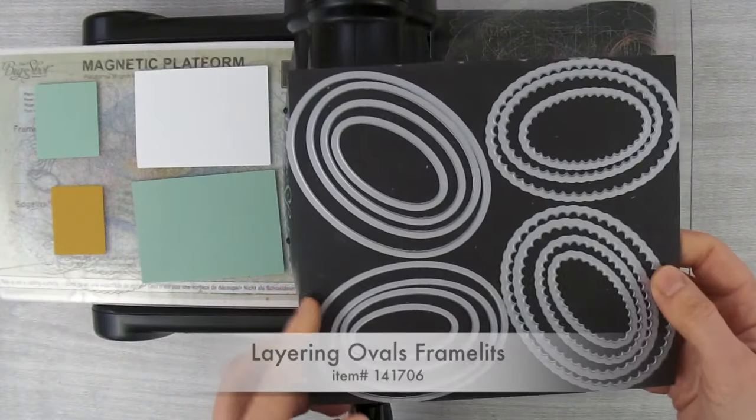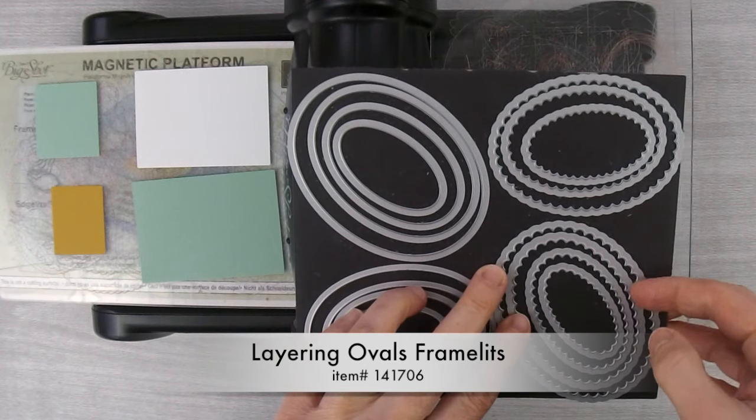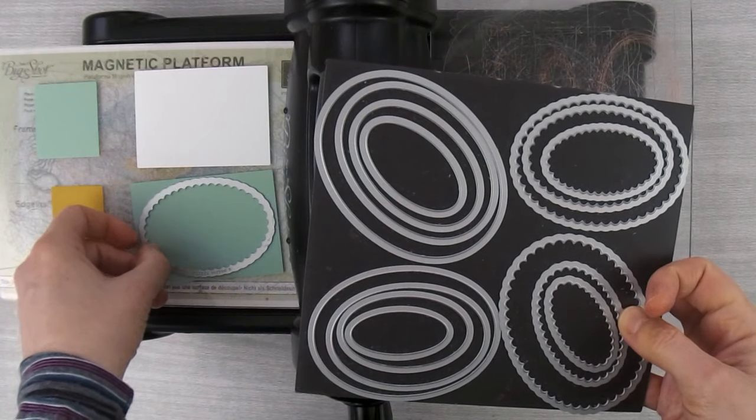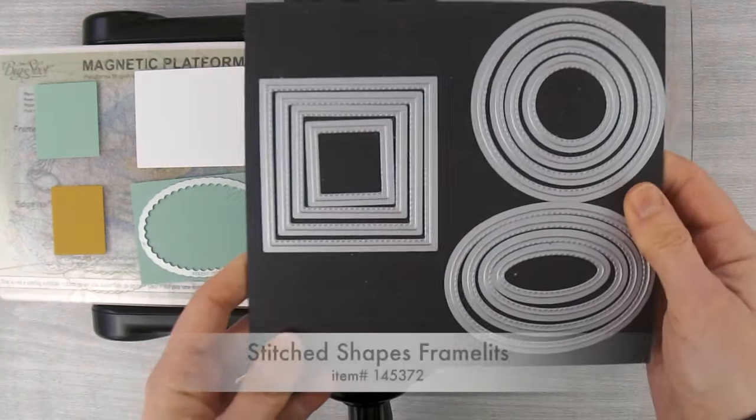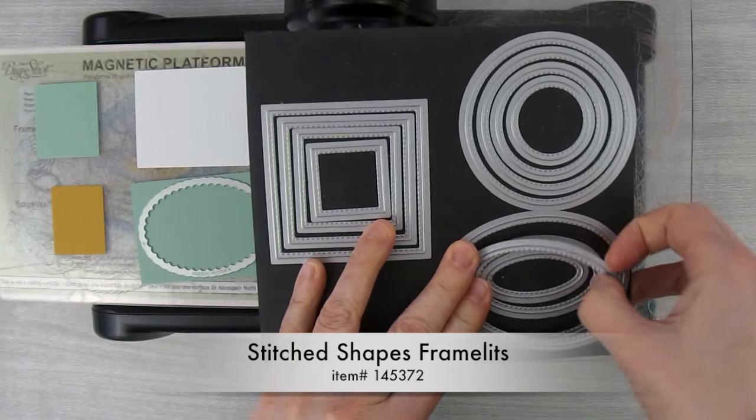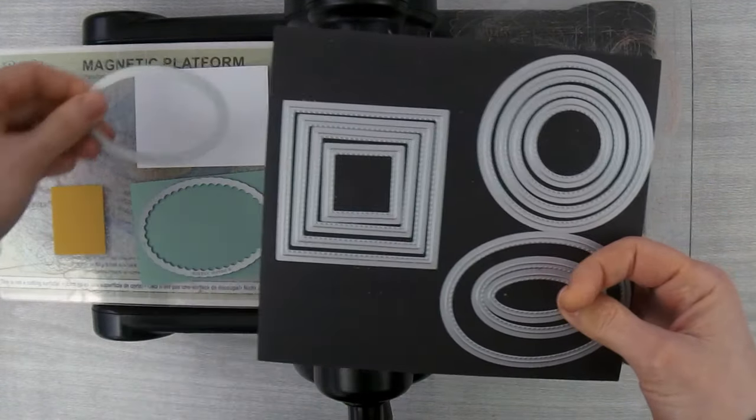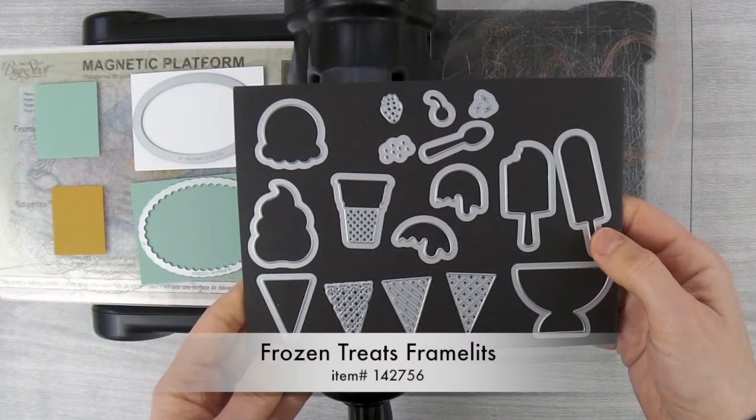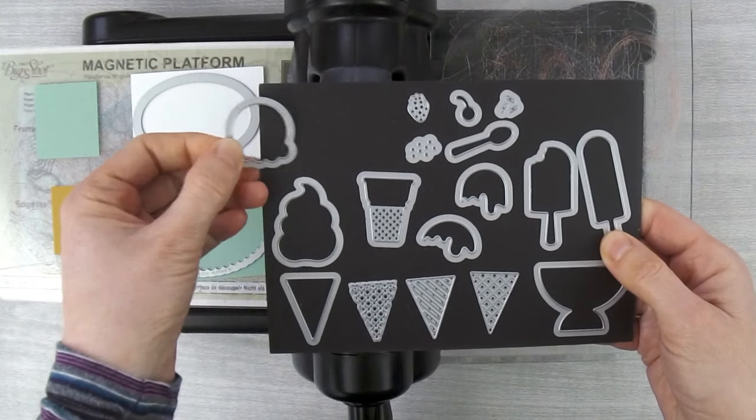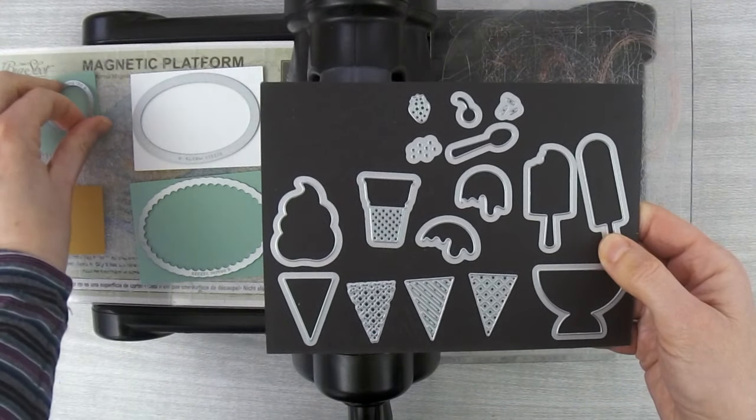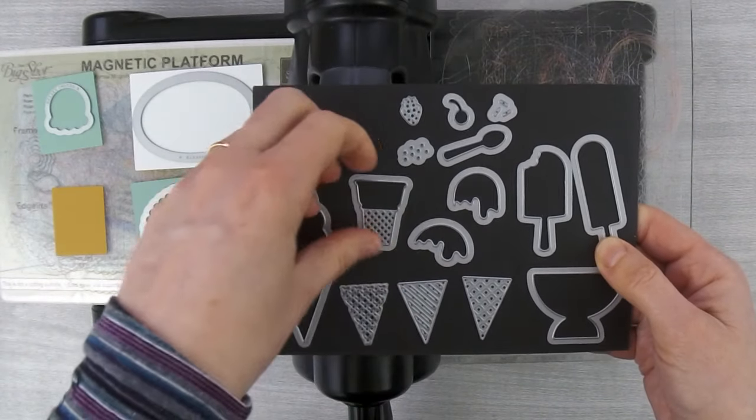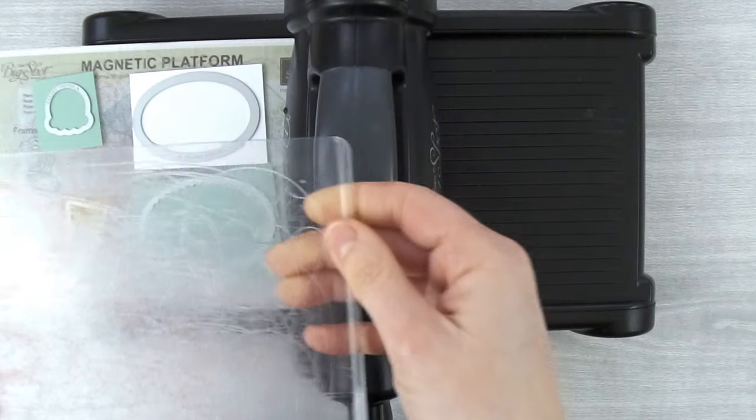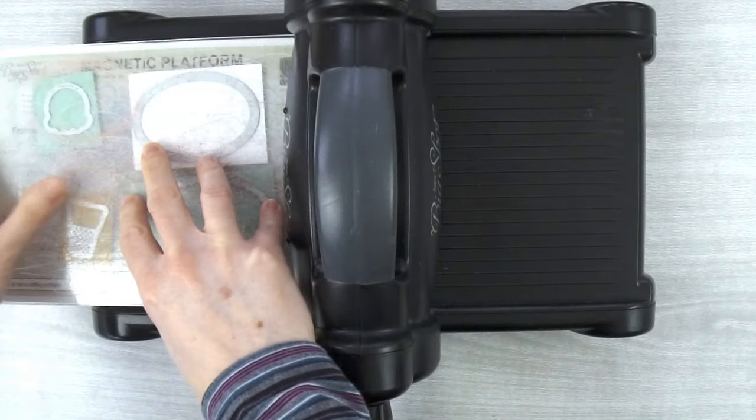Then we're going to use the layering ovals framelits and I'm going to use the third largest scallop oval and put that on my Mint Macaron piece. We're going to be using the stitched shaped framelits and we're going to use the second largest oval. I'll put that on my Thick Whisper White piece and then we're going to need two pieces from the Frozen Treats framelits. We're going to use this ice cream scoop and put that on the Mint Macaron and then we're also going to use this cone and put that on the Delightful Dijon piece. Then I'll put my other cutting plate on top and we'll roll this through.